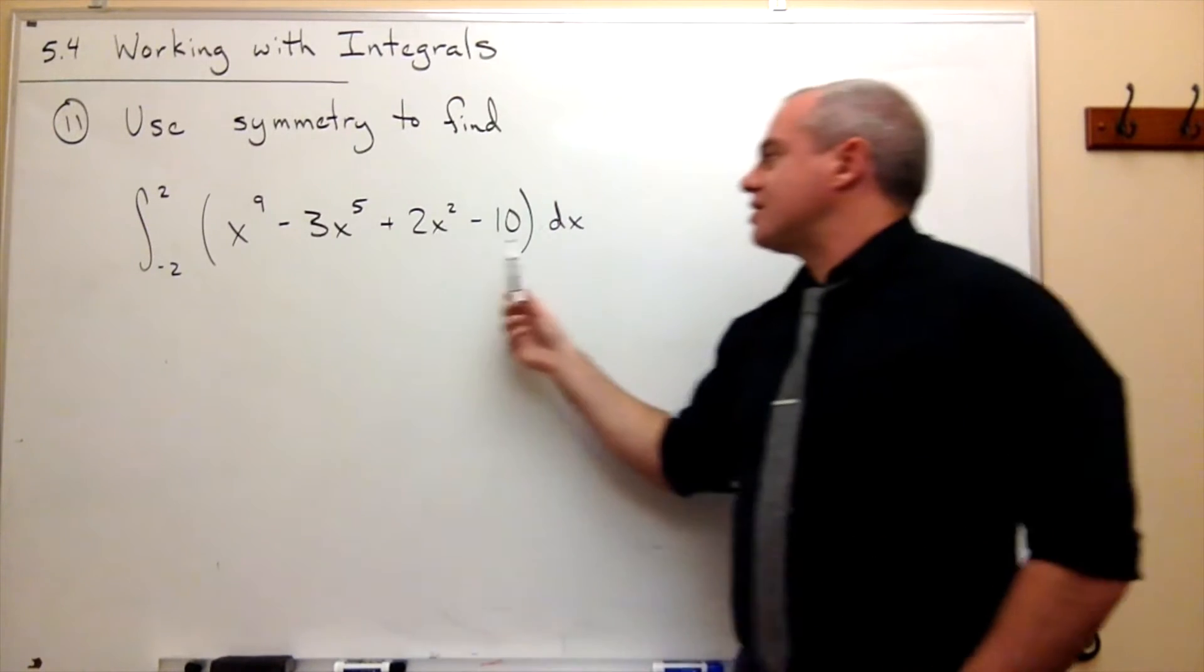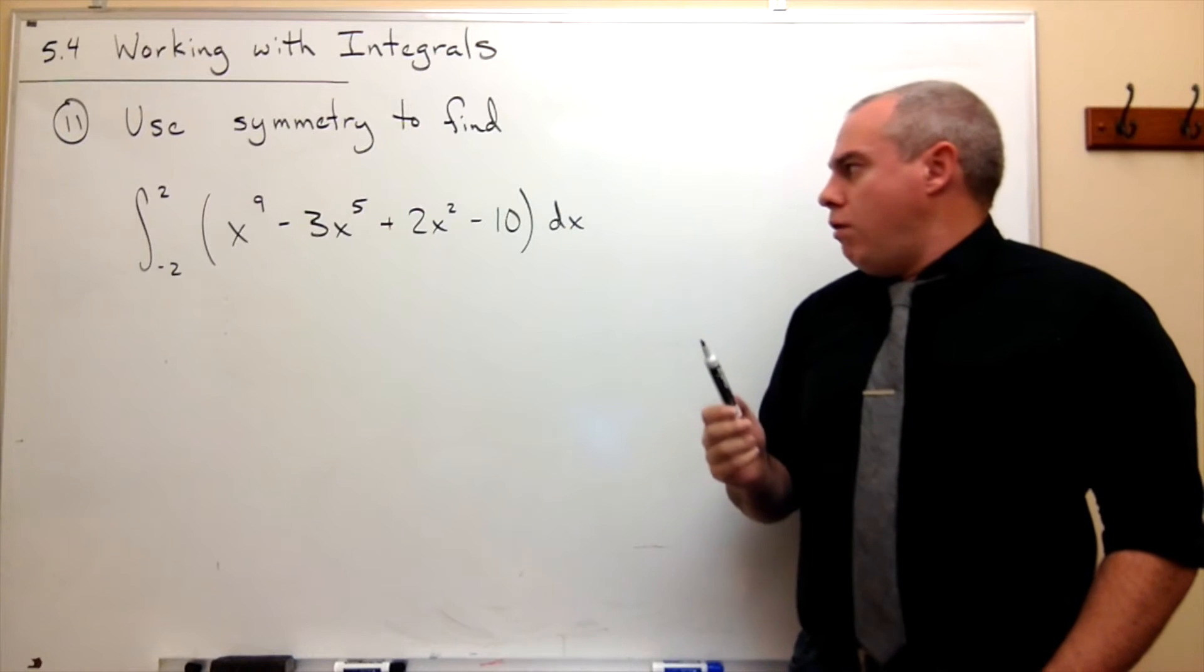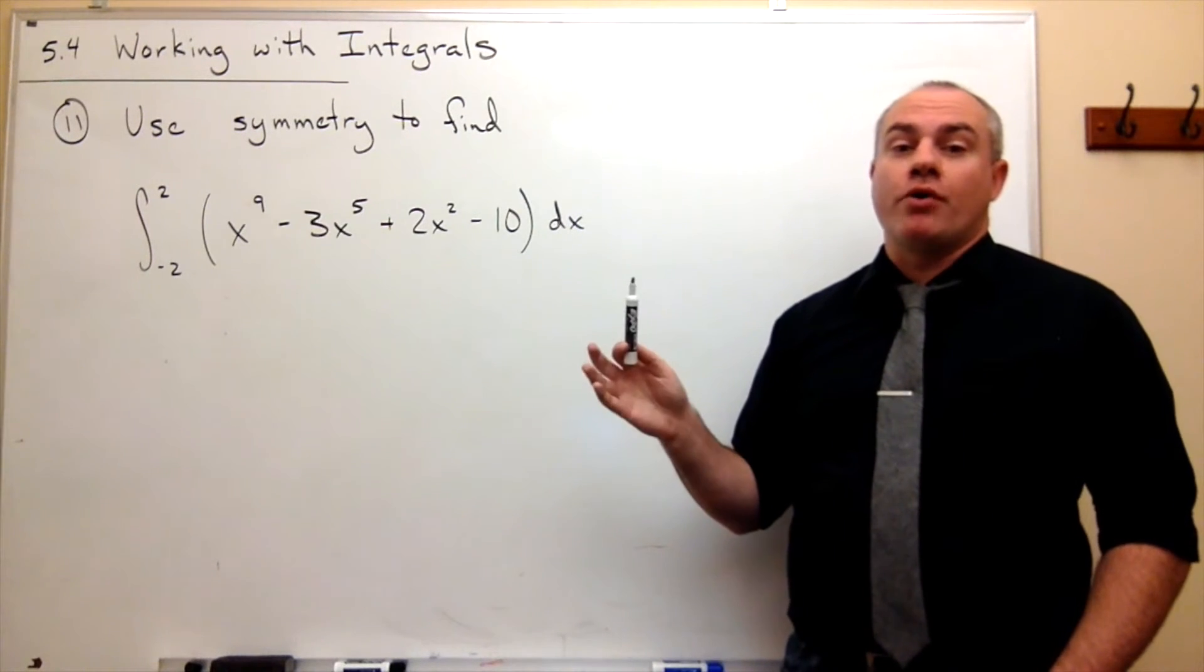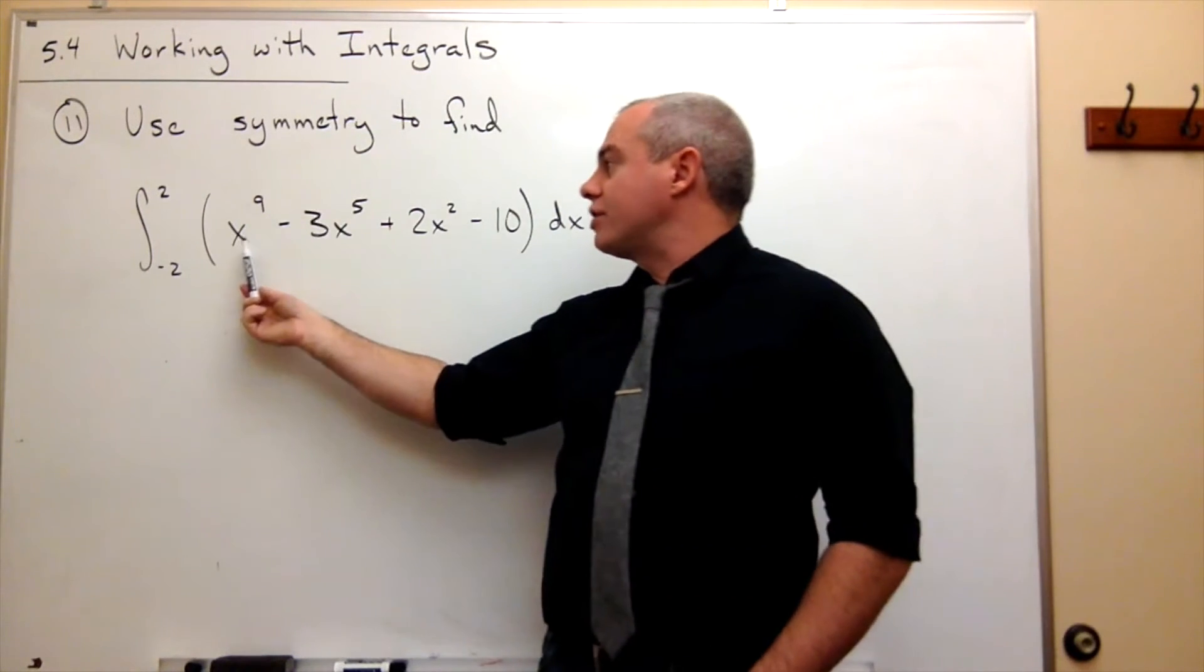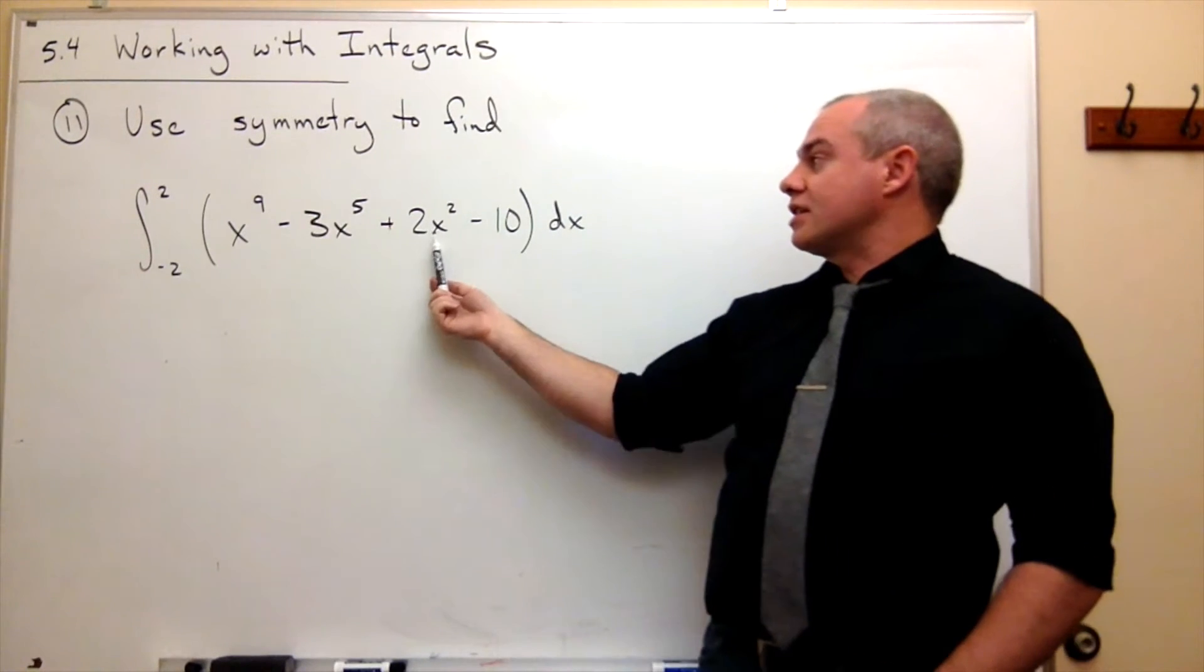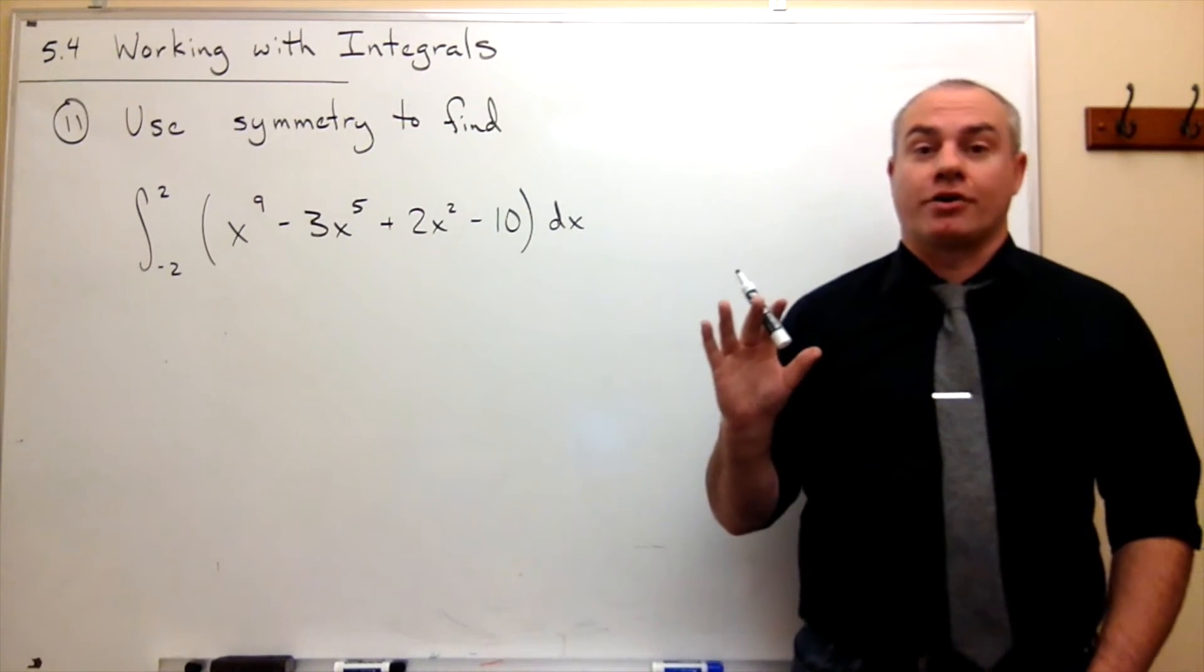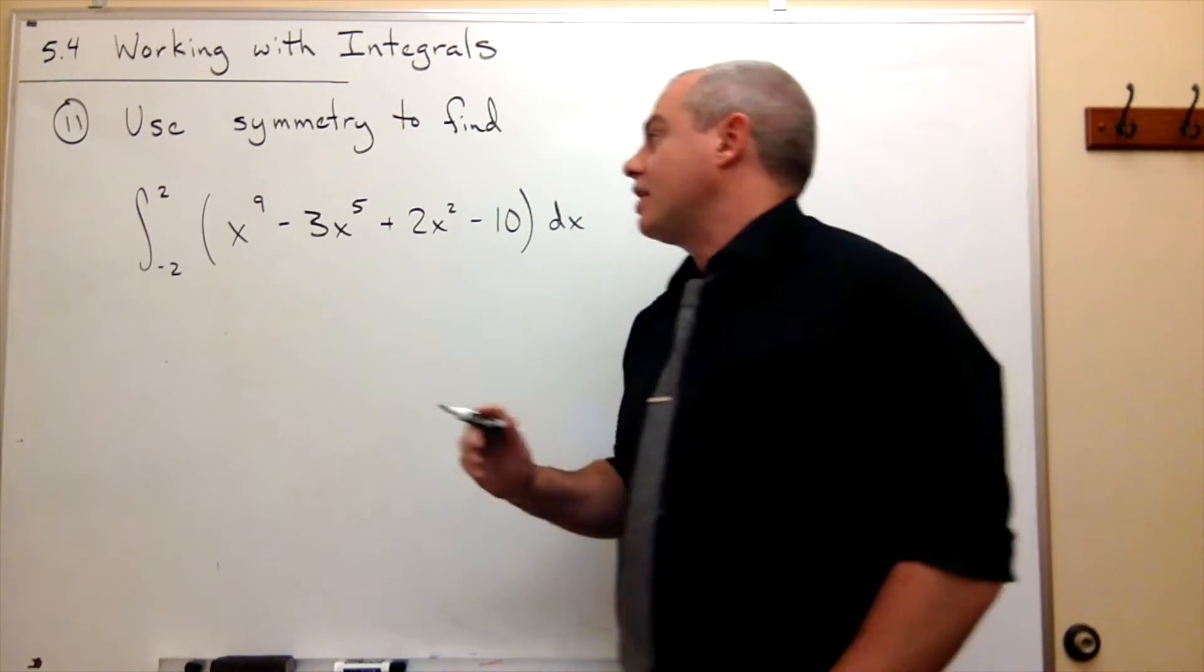Well, this is not an even function or an odd function. So as it is, we can't do either of those tricks. But if we broke it down into some pieces, then we could. I've got some things in here that are odd functions. I've also got some things in here that are even functions. So let's just break these into two integrals, an integral of the odd functions and an integral of the evens.